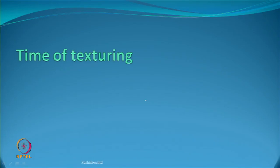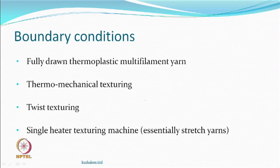The next parameter is the time of texturing. We had temperature; the next parameter which you can optimize is by changing the machine speed. If you change the machine speed, the time of texturing can be changed, because the length of the heater is going to be constant for that machine. Remember the boundary conditions remain the same — we are talking about fully drawn thermoplastic multifilament yarns, twist texturing, single heater.